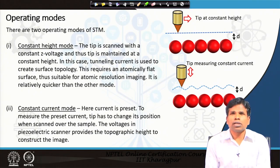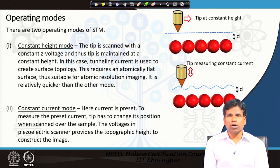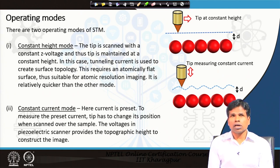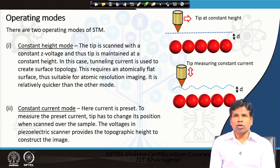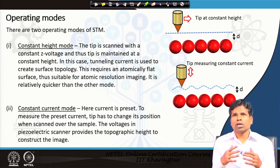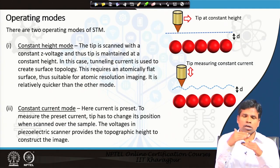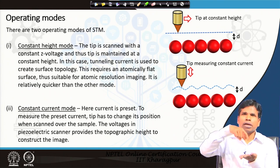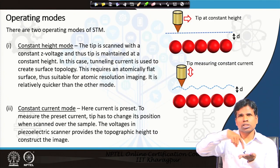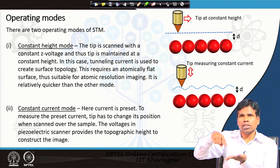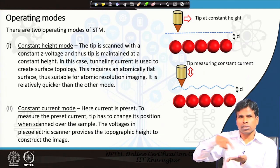As per the operating modes, we have two modes widely used in the scanning tunneling microscope: one is constant height mode and another is constant current mode. In constant height mode, the tip is at the same height above the sample. The tip scans from left to right and again comes back, left to right, scanning in a raster manner.